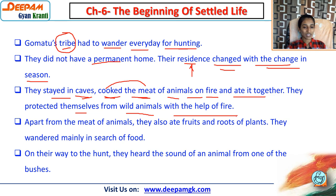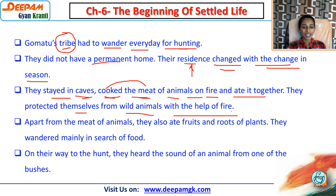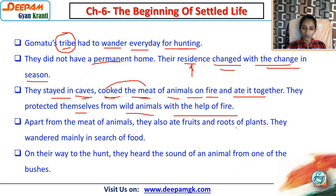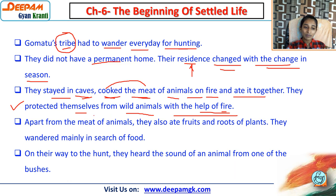They invented fire and protected themselves from wild animals with the help of fire. Wherever fire was placed, animals would not approach. Since early humans lived in the jungle, wild animals could come in large numbers, so fire was their protection.